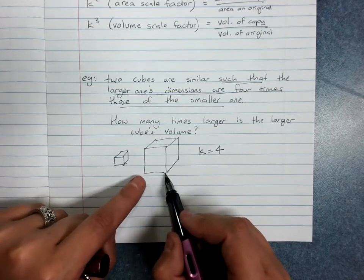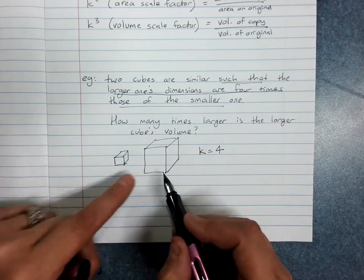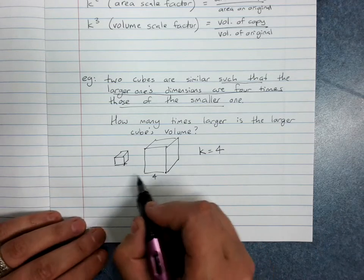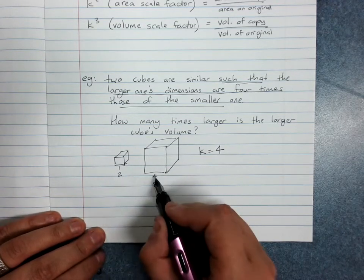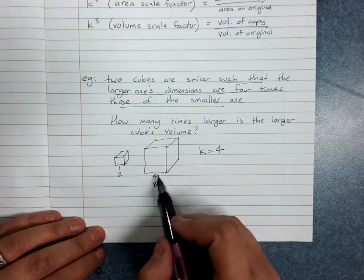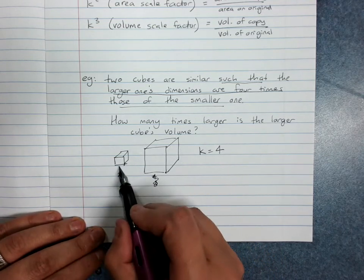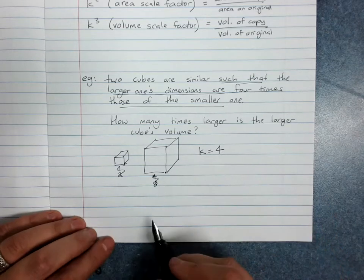Because if this is four times longer than that, you could imagine this would be four to one, or it could be eight to two. We don't know what it is, but I know this is four times bigger. So I know my scale factor is four.